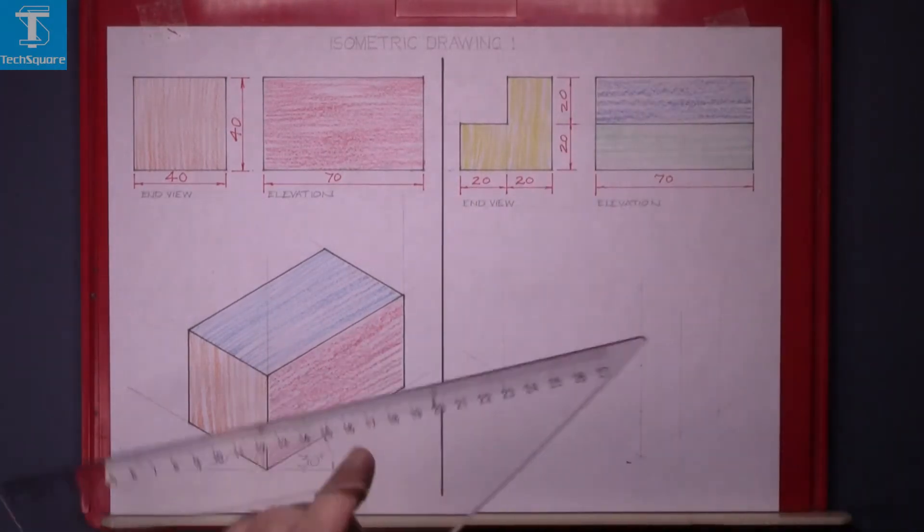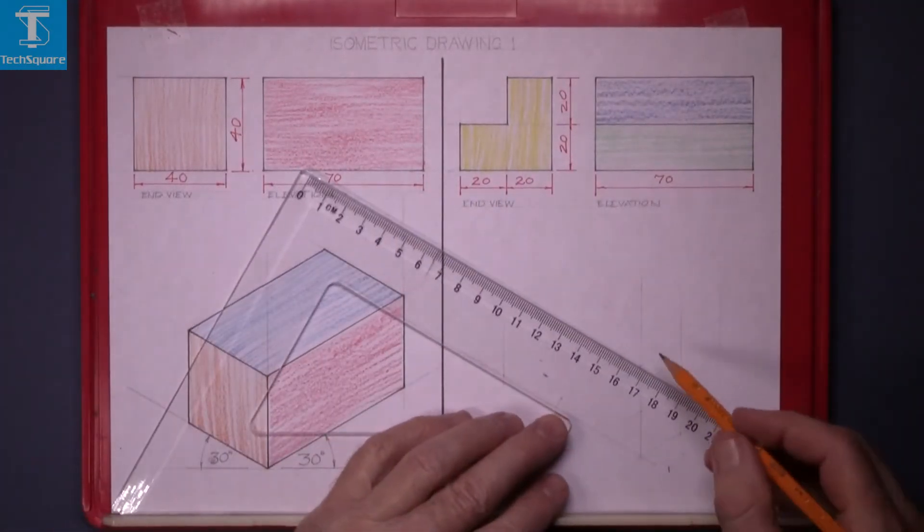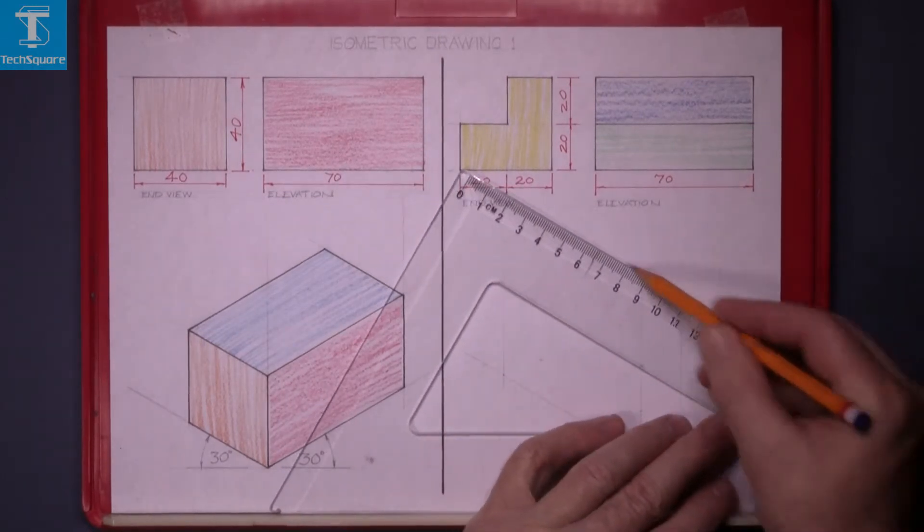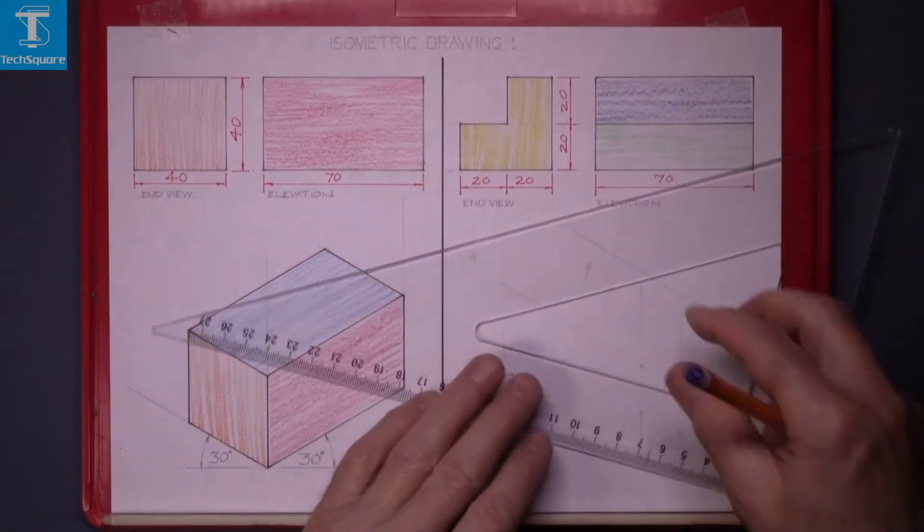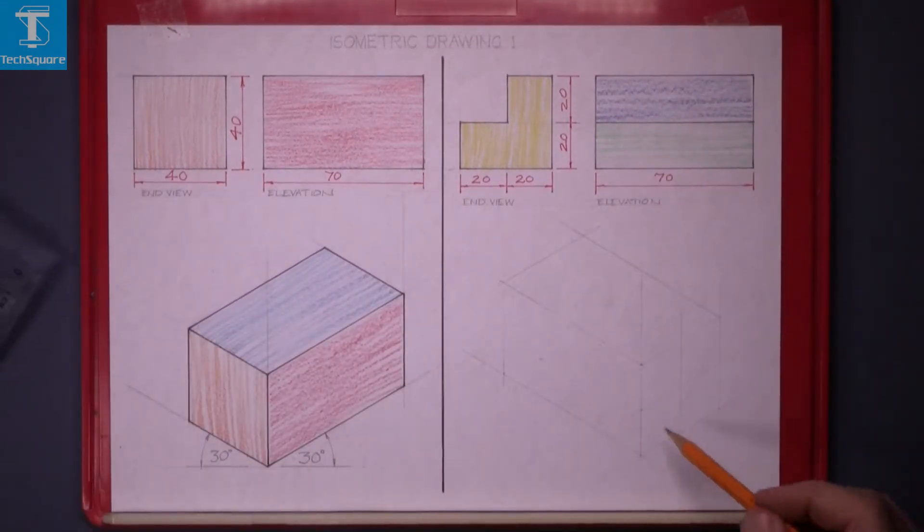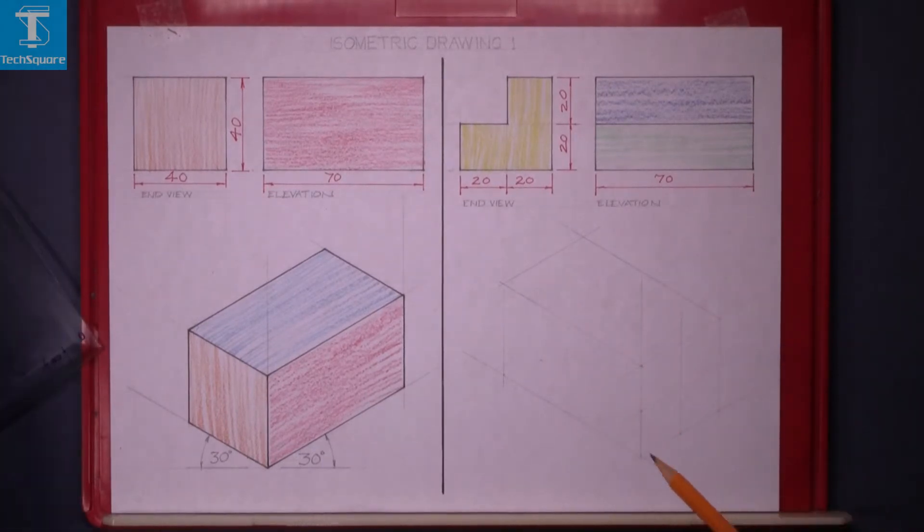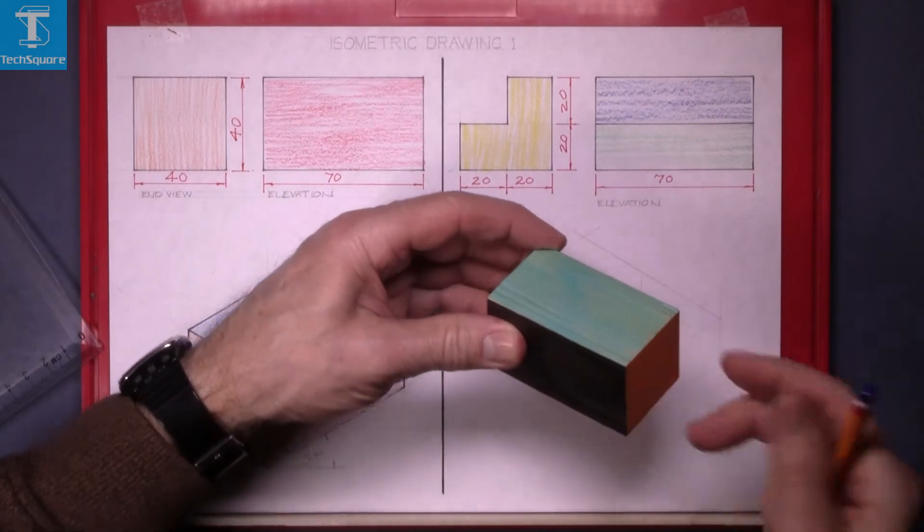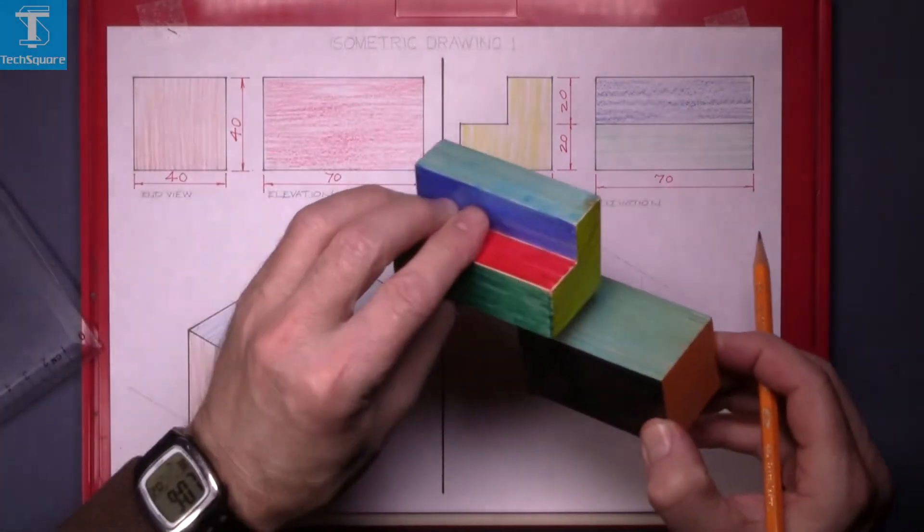Draw vertically up from this point. And then back at 30 degrees from the points you have found. Now what I have done there is I have marked in the block of timber before the trench was taken out of it. That is the block like that before the trench was cut out of it.